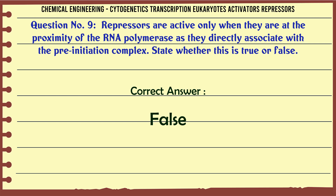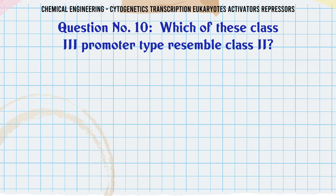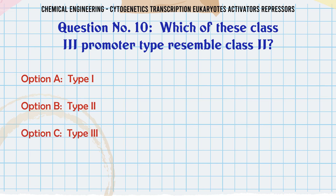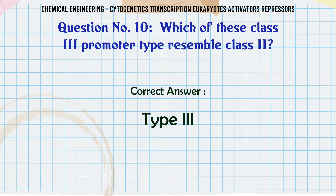Which of these class 3 promoter types resemble class 2? A. Type 1. B. Type 2. C. Type 3. D. Type 4. The correct answer is Type 3.